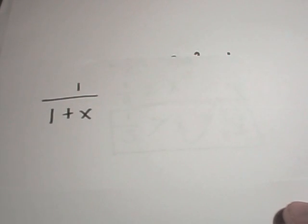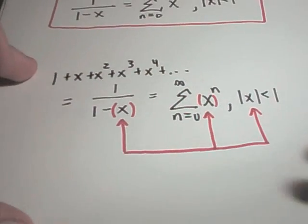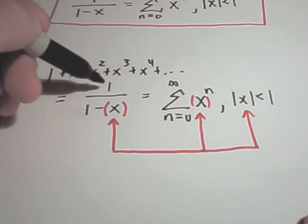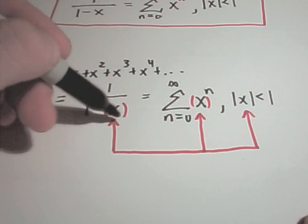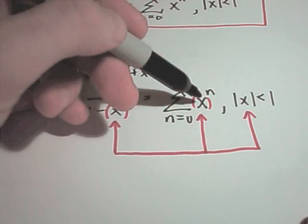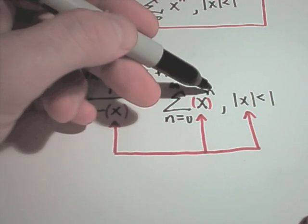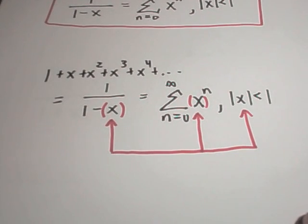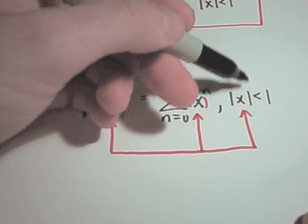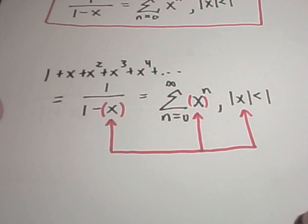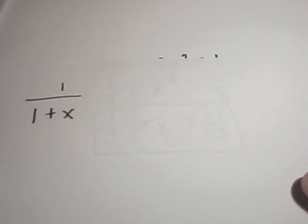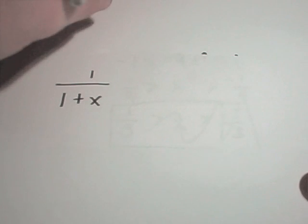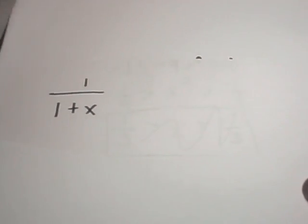I've got five examples to work through. The important thing to notice is the form — we want it to be 1 over 1 minus something. Whatever we're subtracting away, all you do is raise that to the n power, and then plug that into the absolute value and set it less than 1 to get your interval of convergence. We'll find both power series representations and intervals of convergence for each example.